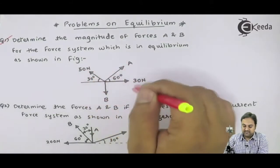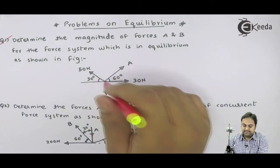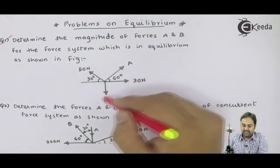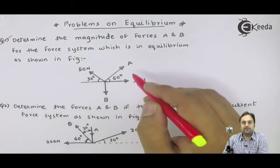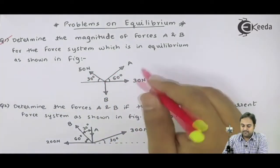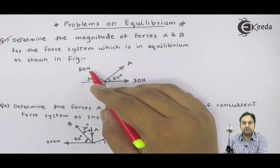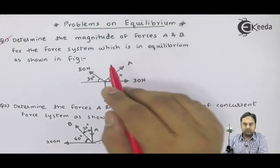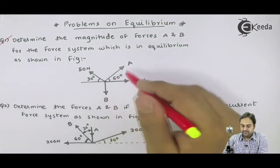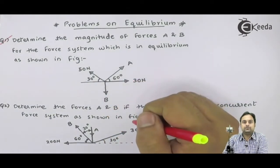Here they have given us a diagram. In this diagram there are 4 forces given, out of which 2 forces values are directly given in the problem - that is 30 Newton and 50 Newton - and they are telling us to find the magnitude of forces capital A and capital B. It means A and B are the unknown forces. So let us try to solve this problem.